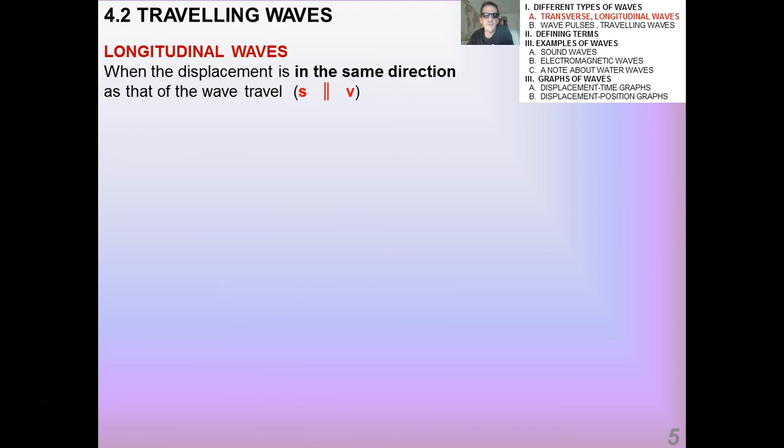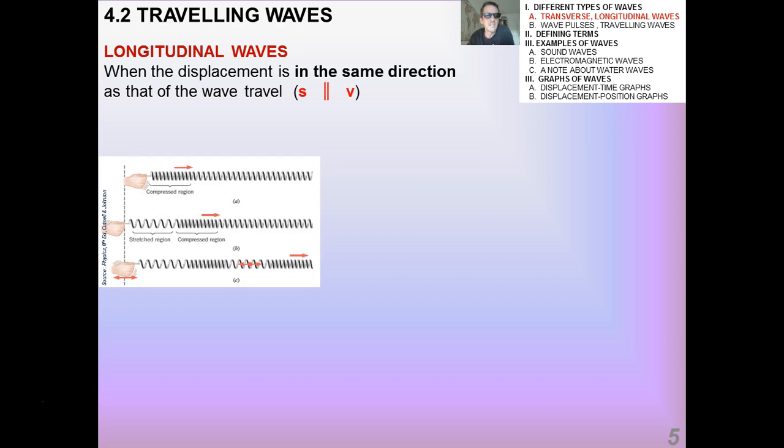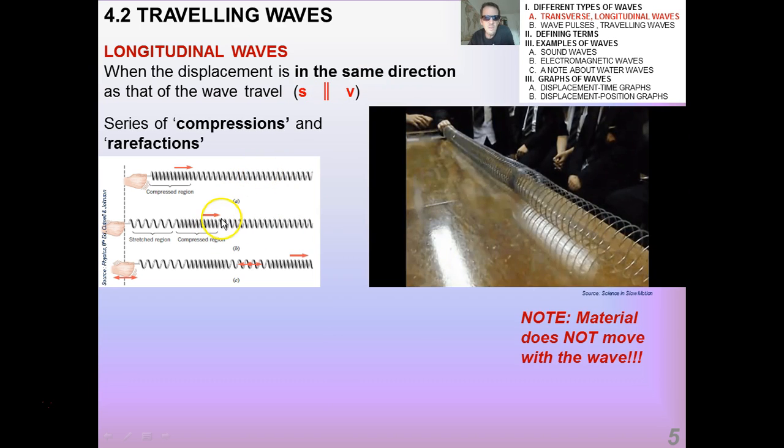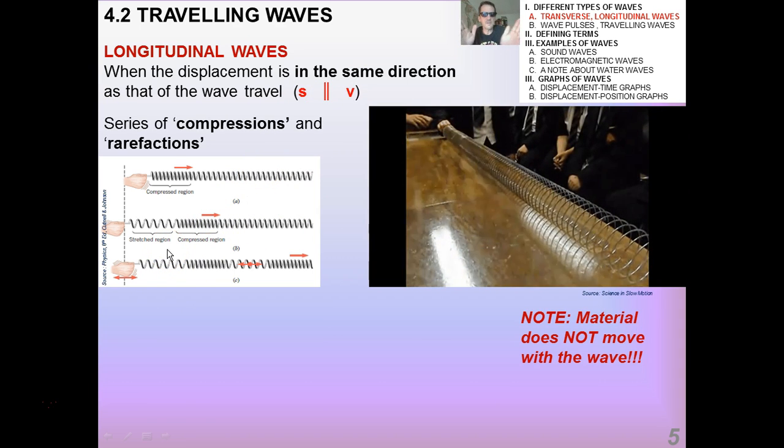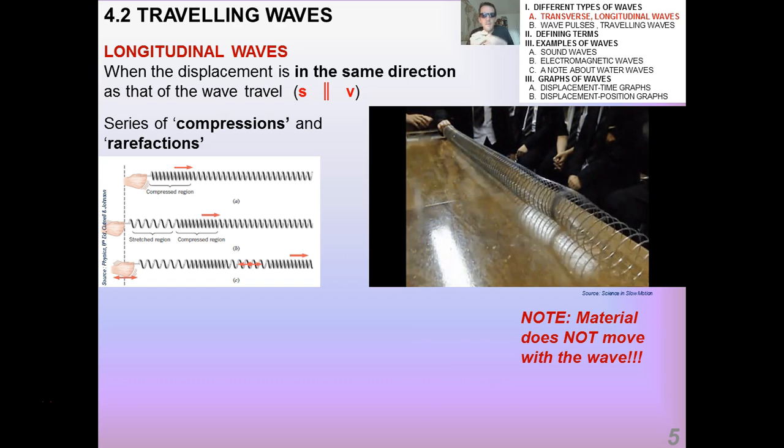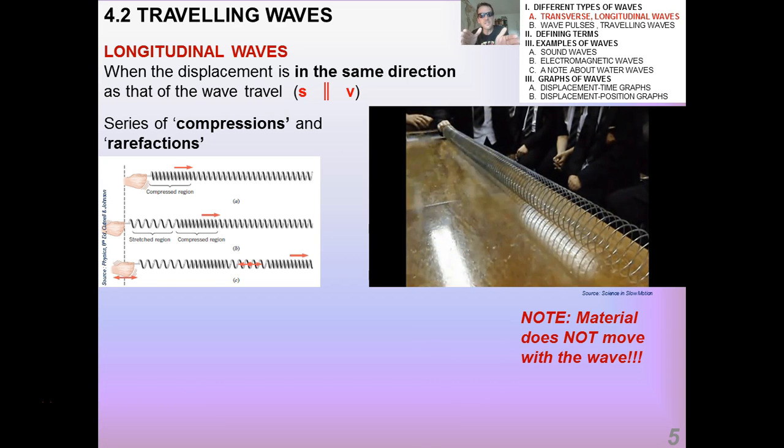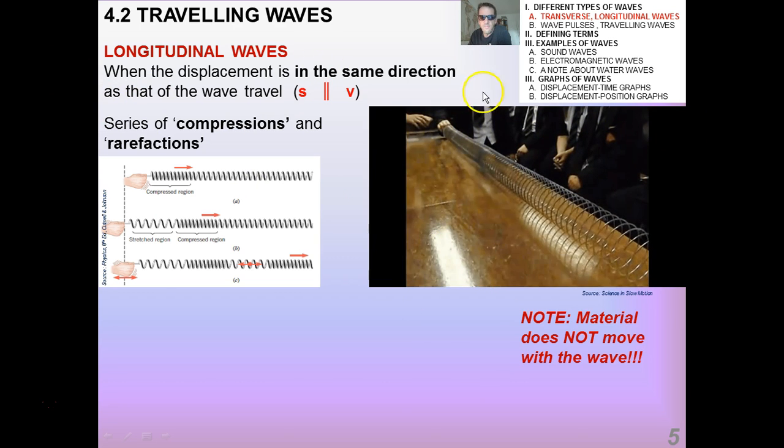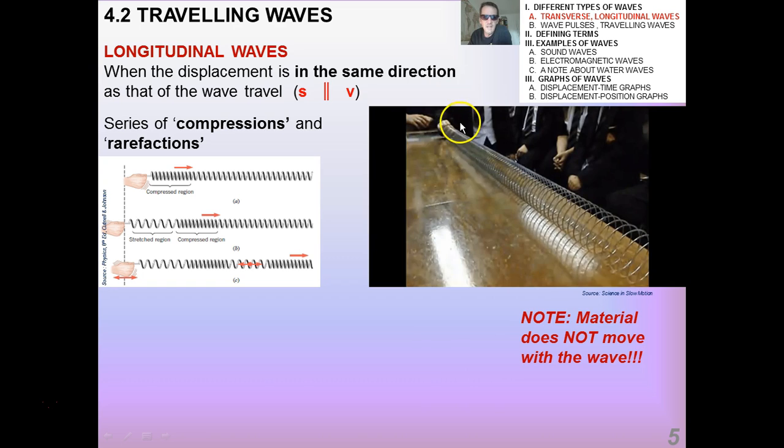In contrast, we have another kind of wave called the longitudinal wave. And this is when the displacement is in the same direction as that of the wave travel. In other words, the displacement is parallel to V. And the only way that you're going to get this is if you have a series of, like with a spring, you're going to have a series of compressions and rarefactions. Compressions are when the density of the coils per unit length is greater than the equilibrium density. And a rarefaction is when that density is less than the equilibrium density. We'll do some playing around with springs in class.